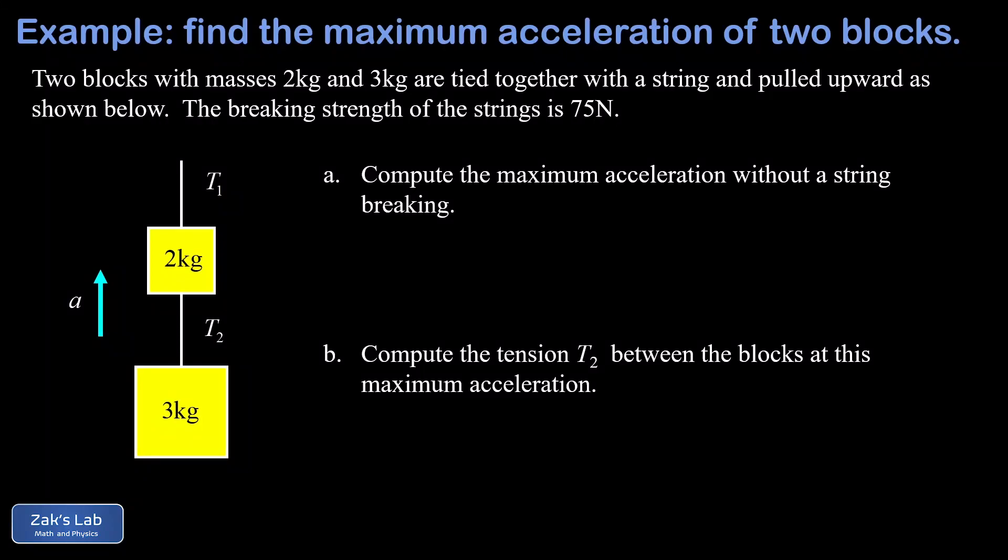In this video we're solving a dynamics problem where two blocks are tied together with a string and then they're accelerated upward. What we're given this time is a little bit unusual - we were told the breaking strength for these strings is 75 newtons and we want to find the maximum acceleration for the two blocks and then we want to find the tension for the string in between the blocks.